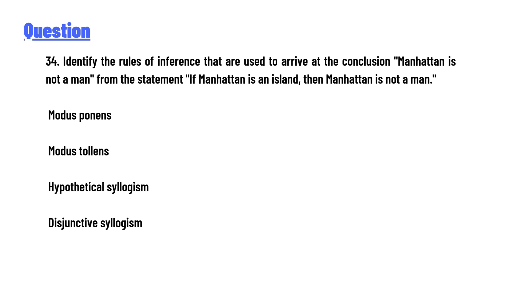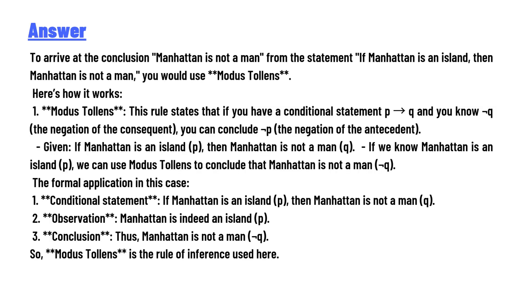The answer: to arrive at the conclusion 'Manhattan is not a man' from the statement 'If Manhattan is an island, then Manhattan is not a man,' we use modus tollens. Here's how it works: modus tollens states that if you have a conditional statement P implies Q, and you know the negative of the consequent (not Q), you can conclude the negative of the antecedent (not P).